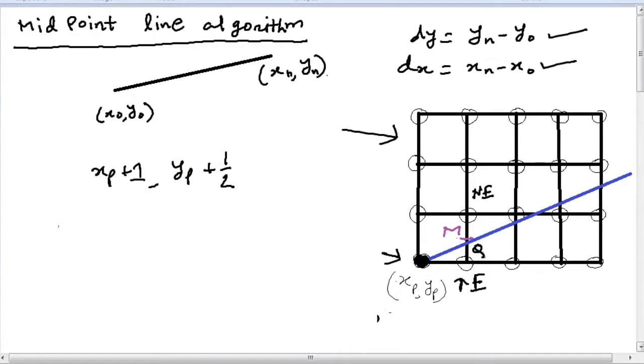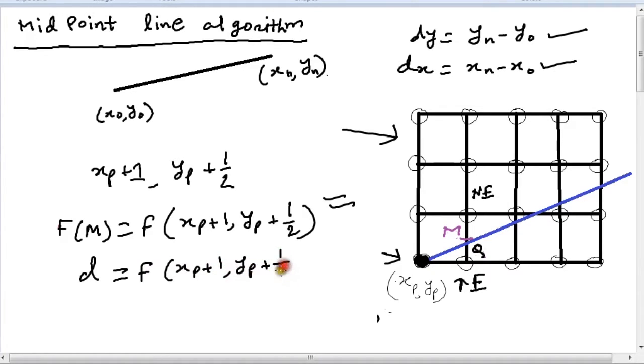Now for the midpoint criterion, we have to find the value of f(M), which is given by f(xp plus 1, yp plus half). Since our decision is based on this value, we define this to be a variable d. Suppose d equals f(xp plus 1, yp plus half).